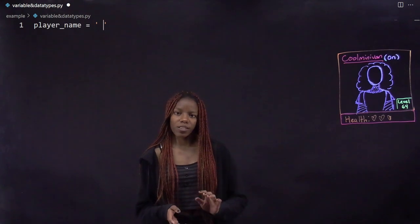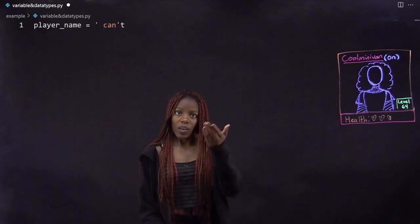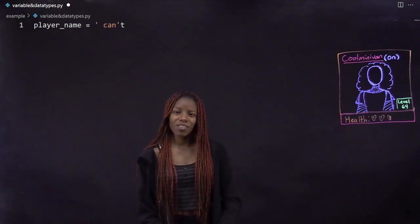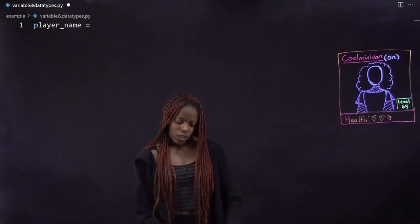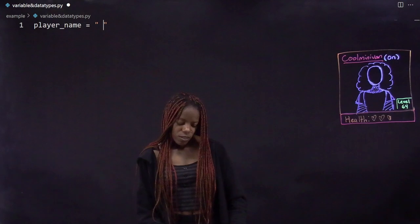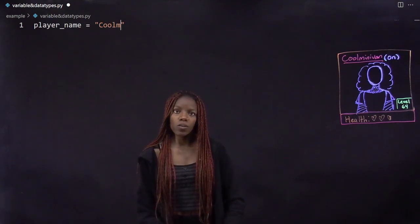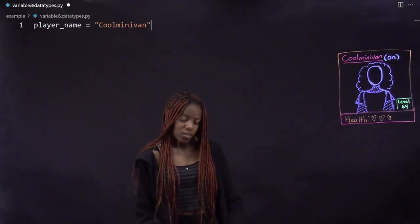The thing about single quotes though is that when you have words that have an apostrophe in it, it starts to mess with the string variable, so it's a better practice to just always use doubles. So we can do CoolMiniVan, and that is our string variable.